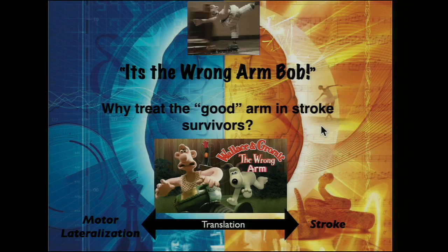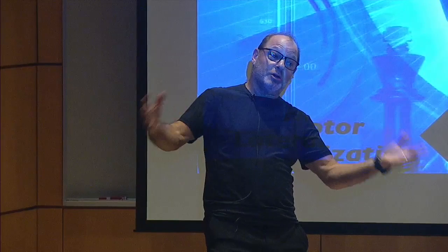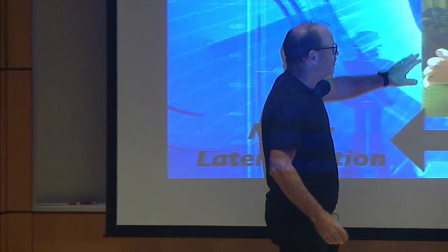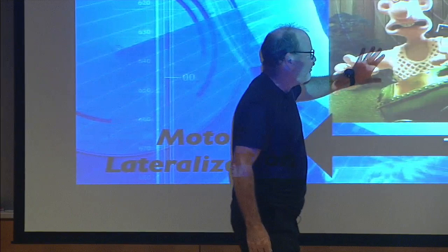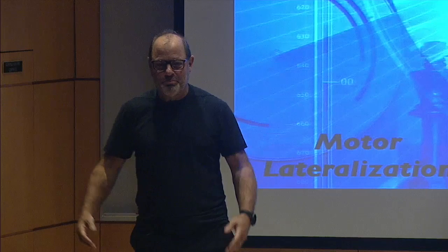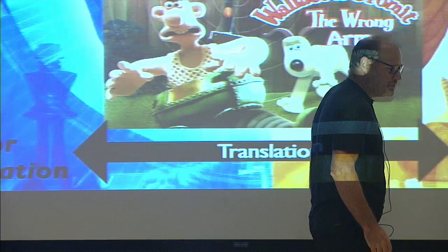All right. So I'm going to talk to you about handedness and brain lateralization, but I'm also going to talk about why we treat the wrong hand in stroke. The reason I have Wallace and Gromit here — raise your hand if you ever saw a Wallace and Gromit movie. My friends like Jules DeWald and Bob Kirsch, at some point in my career they told me, 'Bob, you're working with the wrong hand.' And it reminded me of the 'Wrong Trousers' movie by Wallace and Gromit, which is why this is on here.